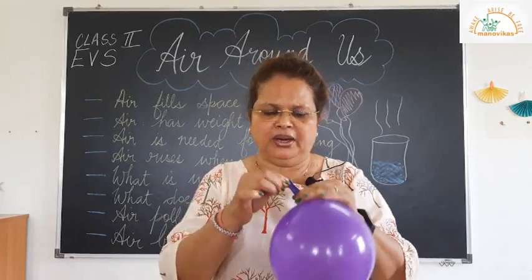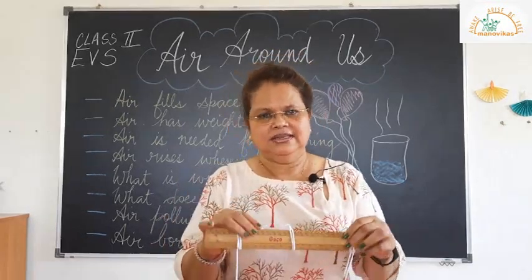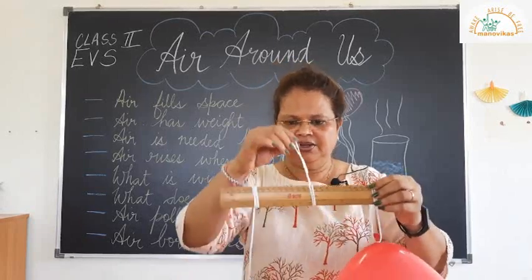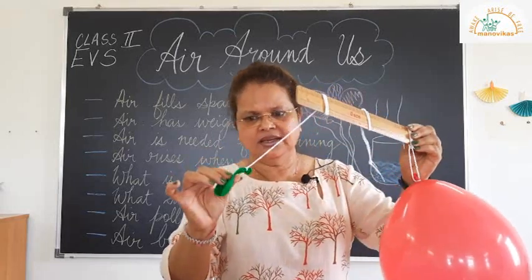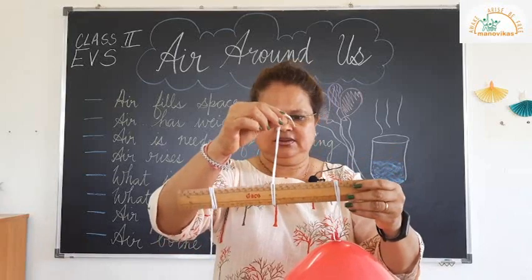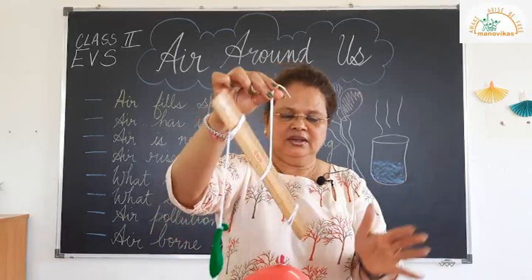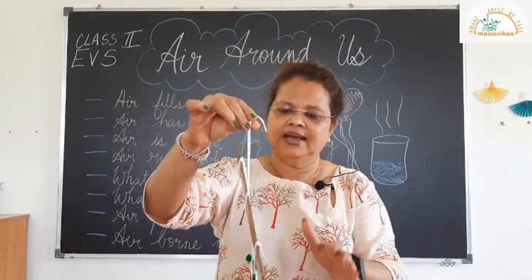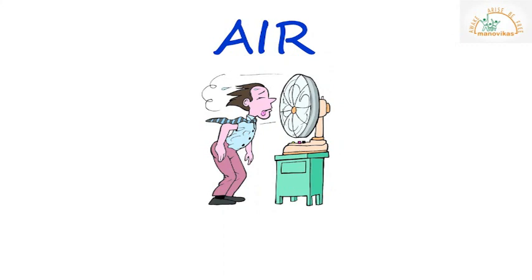This is the second experiment to show that air has weight. I have taken two balloons — one without air and one filled with air. Can you see? The balloon with the air has gone down. This shows that air has weight. In this experiment we also saw that air occupies space. Some things we can fill air into are footballs, tires, and swimming tubes.